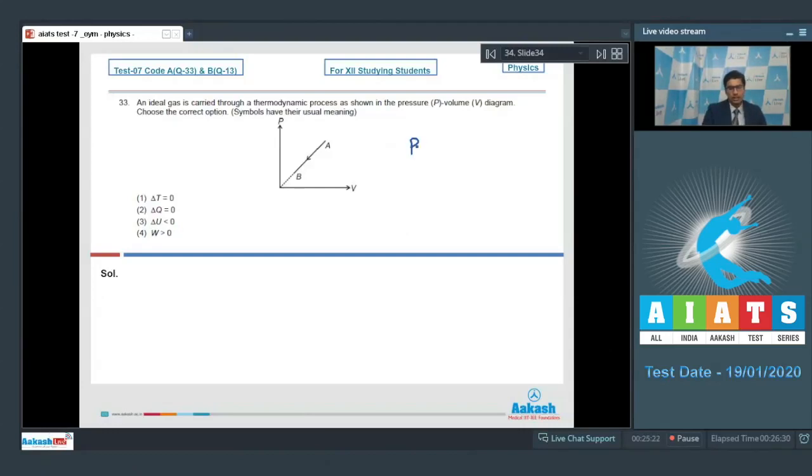We can see here that the pressure and the volume both decrease, which means that the temperature would decrease as well. And when the temperature decreases, the change in internal energy would be negative, which means option number 3 is a correct statement. Since the volume is decreasing, the work done will be negative. That is, option number 4 is incorrect.